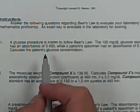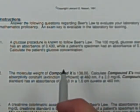So the first problem says a glucose procedure is known to follow Beer's Law. The 100 milligram per deciliter standard has an absorbance of 0.430, while the patient's specimen has an absorbance of 0.780. Calculate the patient's glucose concentration.